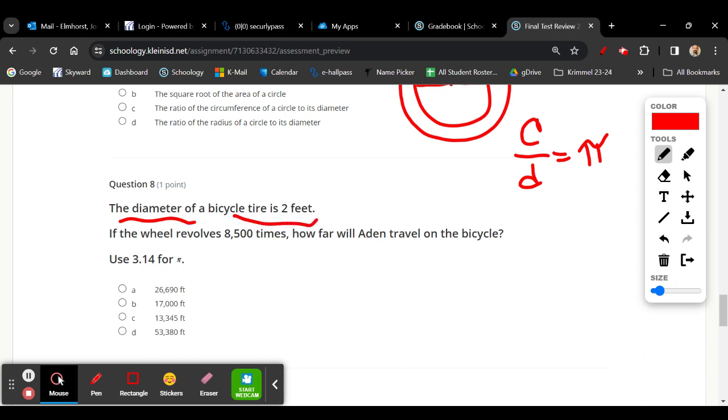The diameter of a bicycle tire is two feet. Revolves means circumference. So it's going around and around and around. So we're going to use circumference is equal to pi times the diameter. Circumference is equal to 3.14 times 2. Estimation, let's see, multiplying, so that's going to be 6.28. And we're going to multiply that by revolutions to find the total distance.